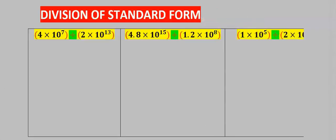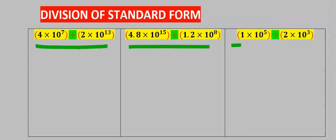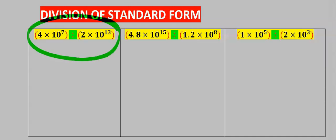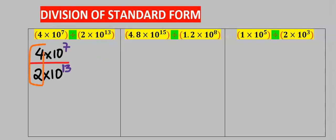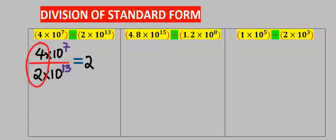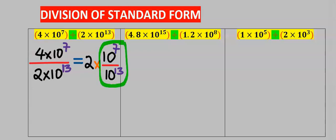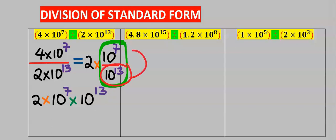Next, division of standard form. Let's consider each question. We divide the numbers separately and divide the tens separately. According to the law of indices, when 10 to the power of 13 moves to the denominator, the exponent 13 acquires a negative sign.